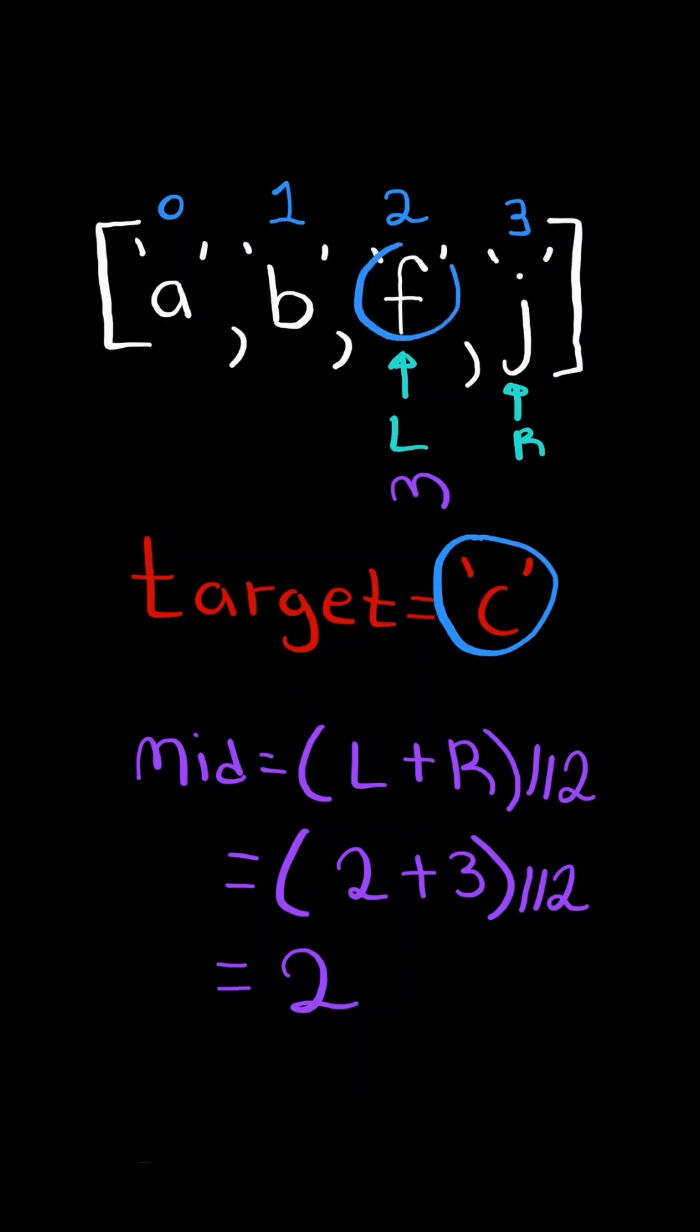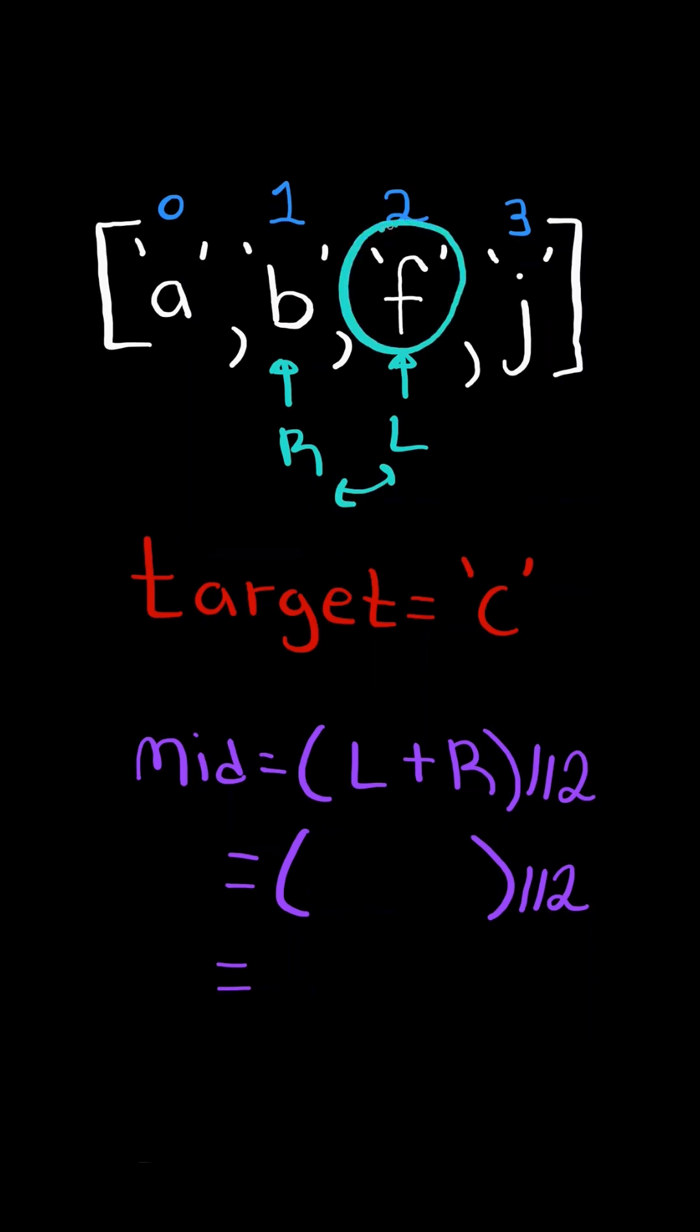Now the target is less than mid, so we decrement our right pointer to mid minus one. When L and R cross each other, then we return left.